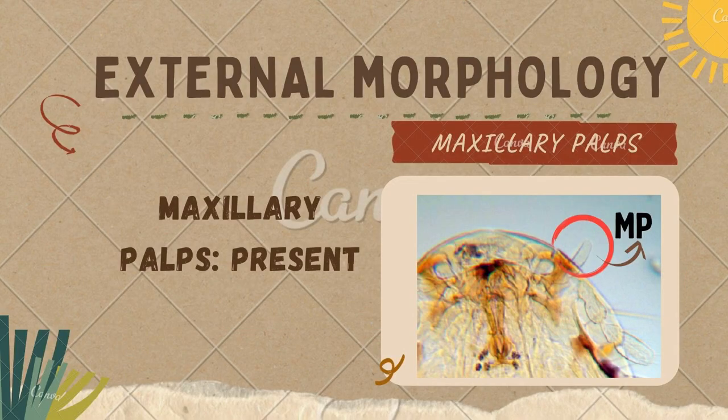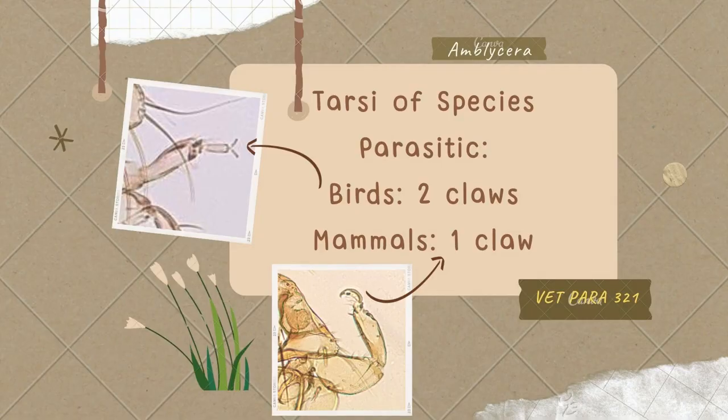The maxillary palps are present and visible in the mounted specimens. Those that are parasitic on birds have two claws, and those that are parasitic on mammals have only one claw.